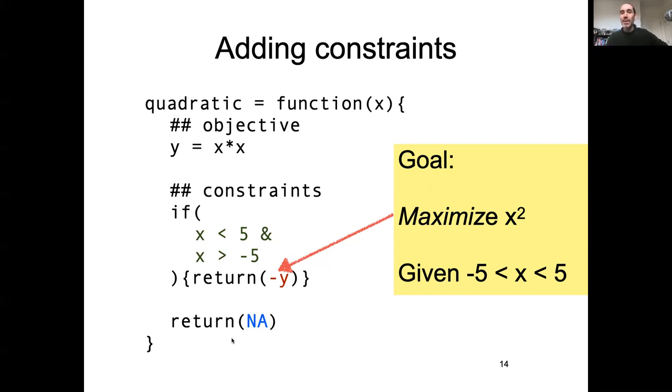So if it proposes a new value that's outside of the constraints, it will return an NA, will reject that, and will try a different direction.